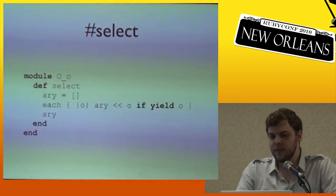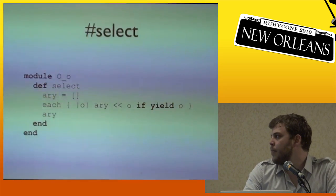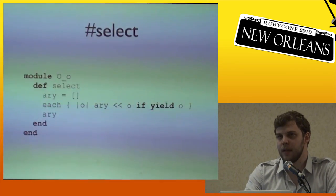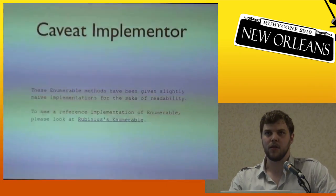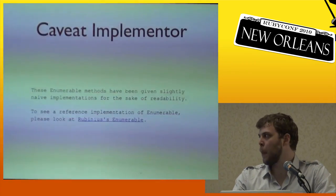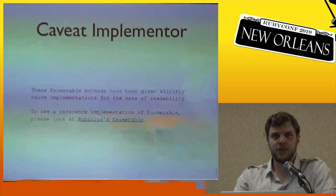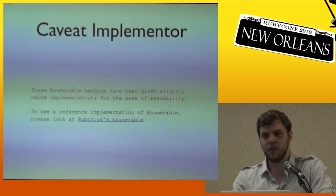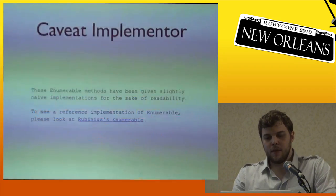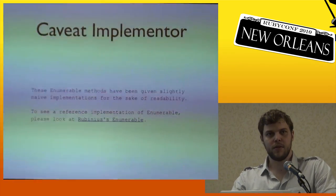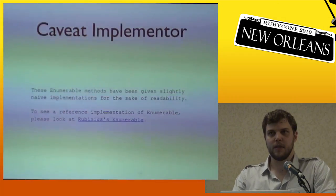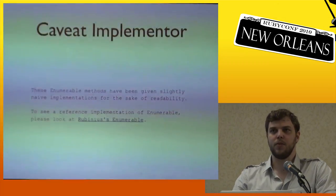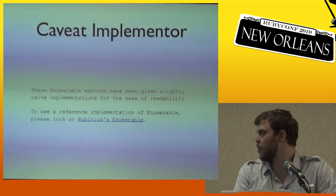Select is similar to detect but instead of returning the first item, it yields that item if the result of yielding it to the block is true. These implementations are somewhat naive — they don't handle all possible arguments. If you want a full implementation, look at Rubinius, which is Ruby written in Ruby. Reading Rubinius equivalents is the best way to understand C methods in Ruby without having to parse C.